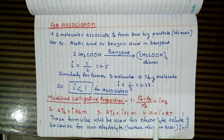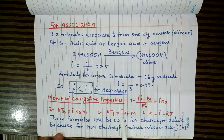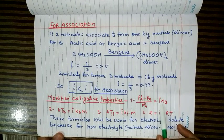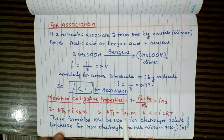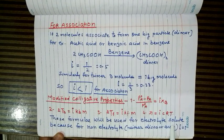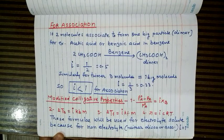Once the Van't Hoff factor i is introduced, the determined molecular mass becomes equal to the normal molecular mass. The modified forms of colligative property formulas become: relative lowering of vapour pressure = i × x_B; elevation in boiling point ΔT_B = i × K_B × m; depression in freezing point ΔT_F = i × K_F × m; and osmotic pressure π = i × C × R × T. The factor i accounts for the extent of dissociation or association in the solute.